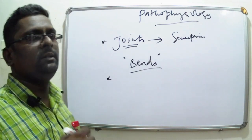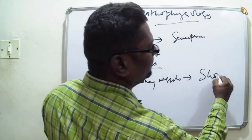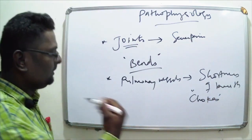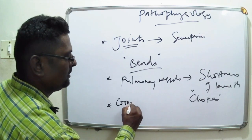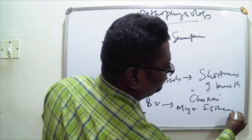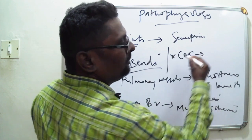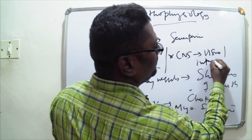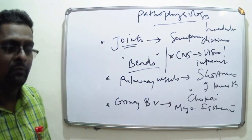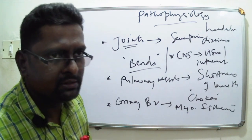If there is blockade of pulmonary vessels, there would be shortness of breath — dyspnea — which is called 'chokes.' If coronary blood vessels are blocked, we can get myocardial ischemia. If blood vessels in the brain or central nervous system are affected, the individual can suffer from visual impairment, dizziness, headache, coma, convulsions, or even death, depending on which vessels are blocked.